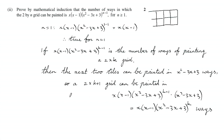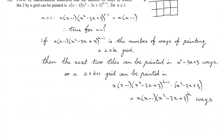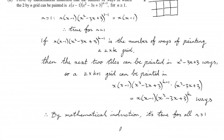So that's x times (x minus 1) times all of that times (x squared minus 3x plus 3). Then we can simplify because that matches the formula, giving the result for n equals k plus 1. We've shown that if it's true for n equals k then it's also true for n equals k plus 1, and we've shown it's true for n equals 1, therefore by mathematical induction it's true for all n greater than or equal to 1.